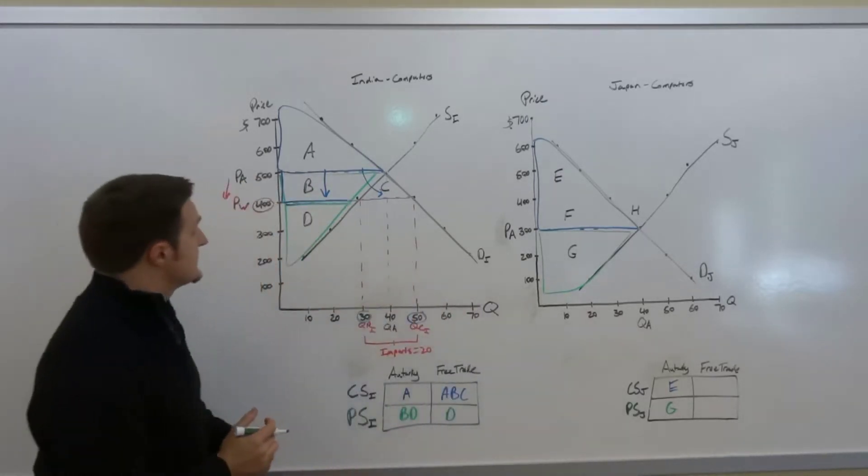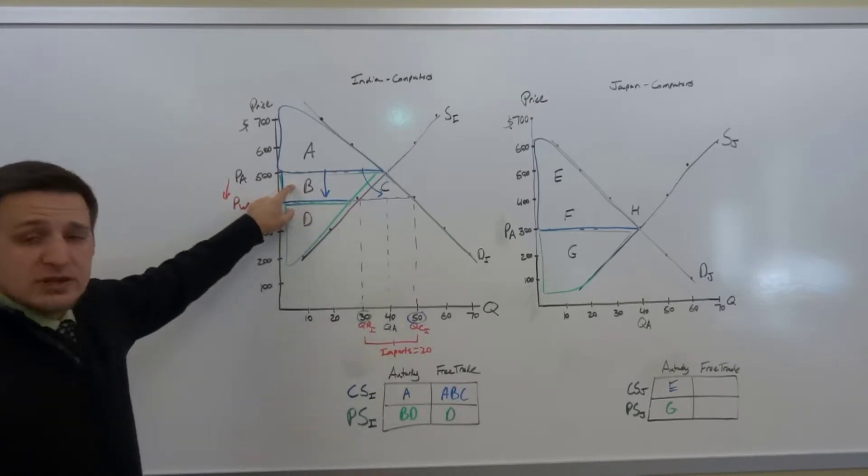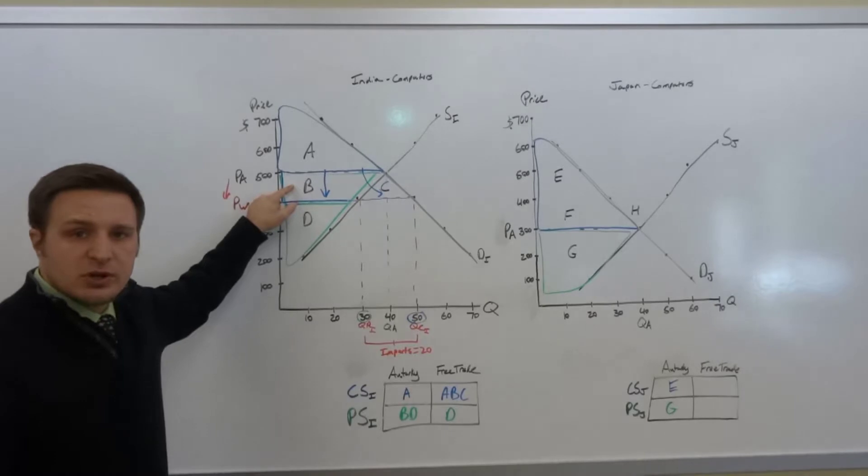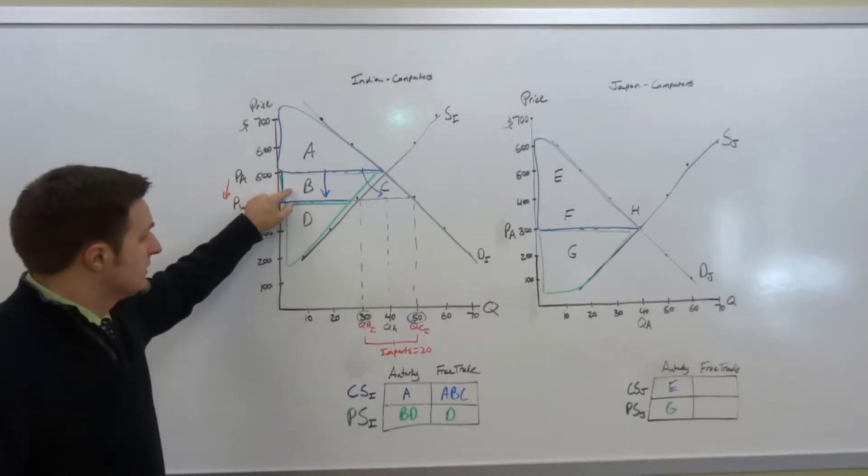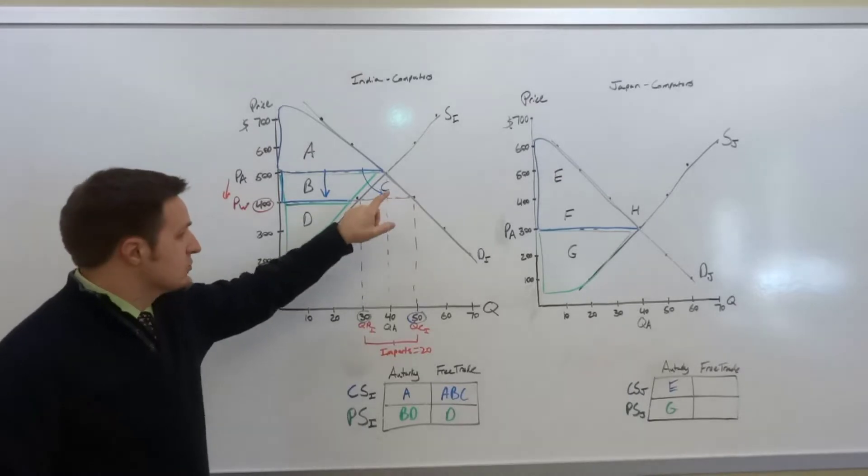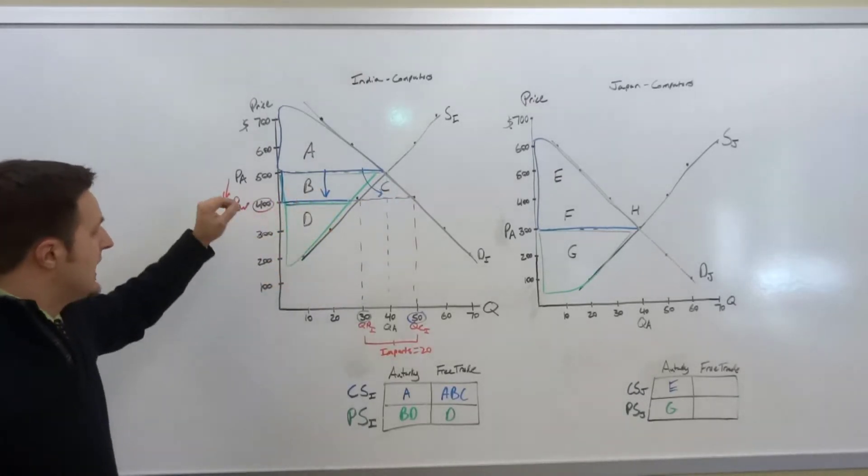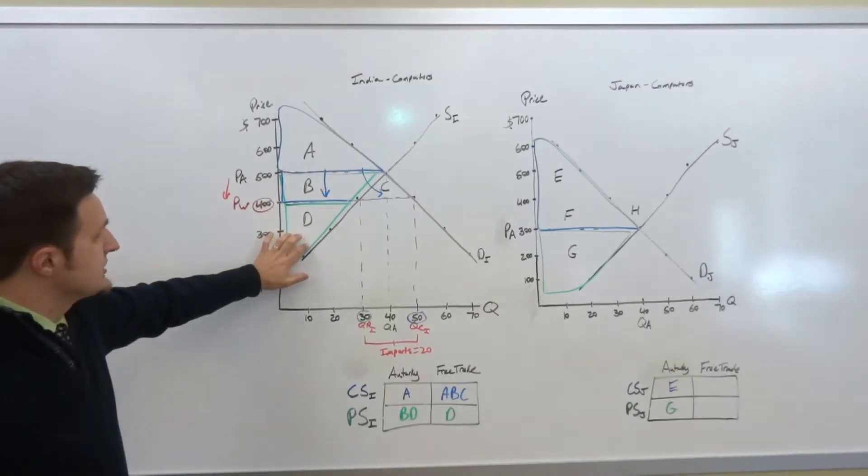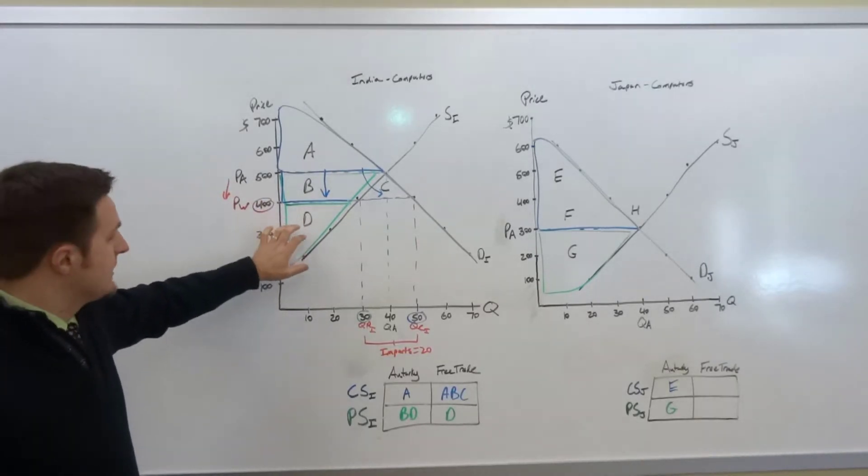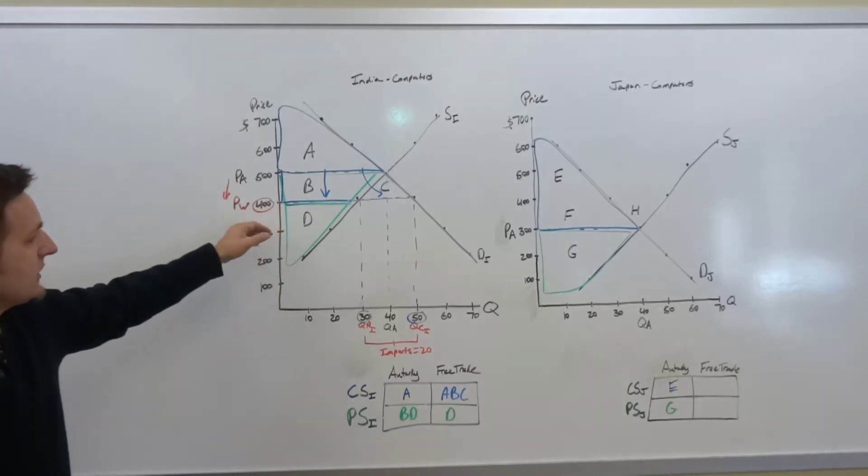So in this case we can see that the consumers have massive gains. Area B is transferred from producers to consumers, but area C is actually the gains from trade. So this is a net gain for the Indian economy. Obviously the producers in India, the domestic producers, are not overly happy about the fact that Indian consumers are now importing cheaper computers.